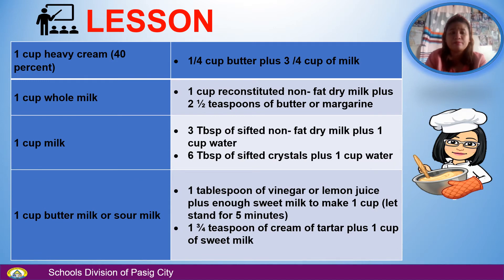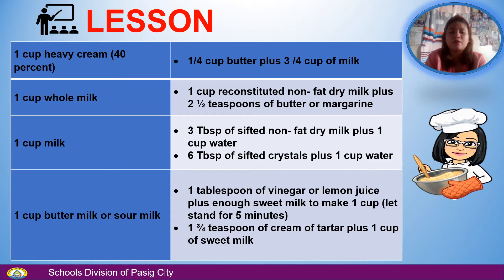1 egg yolk equals 1 and one-third tablespoon of frozen egg yolk. 1 egg white equals 2 tablespoons of frozen egg white, or 2 teaspoons dry egg yolk powder plus 2 teaspoons of water. 1 square unsweetened chocolate equals 3 tablespoons of cocoa plus 1 tablespoon of fat. 1 cup of butter equals 1 cup of margarine, or 7/8 to 1 cup hydrogenated fat plus one-half teaspoon of fat, or 7/8 cup of lard plus one-half teaspoon of salt. 1 cup of heavy cream 40% equals one-fourth cup butter plus three-fourths cup of milk. 1 cup of whole milk equals 1 cup reconstituted non-fat dry milk plus 2 and one-half teaspoons of butter or margarine. 1 cup of buttermilk or sour milk equals 1 tablespoon of vinegar or lemon juice plus enough sweet milk to make 1 cup, let it stand for 5 minutes; or 1 and three-fourths teaspoon of cream of tartar plus 1 cup of sweet milk.